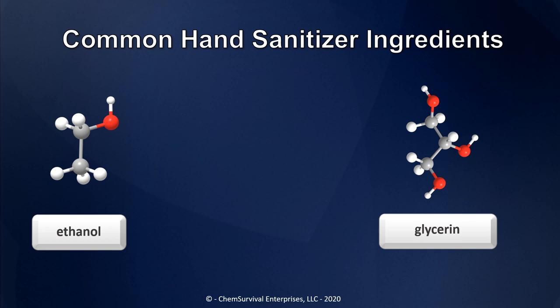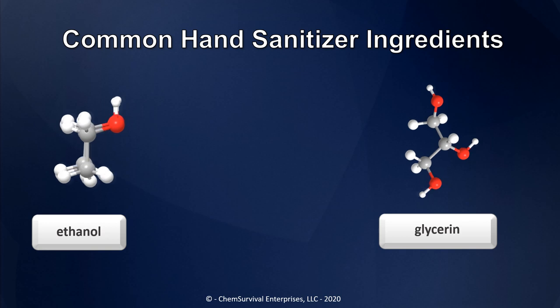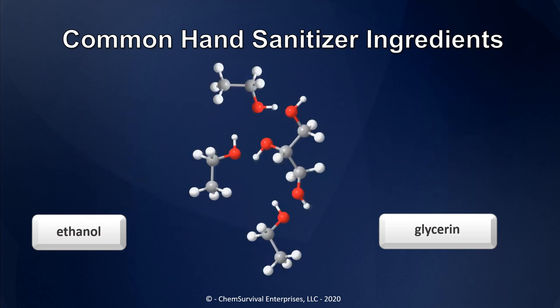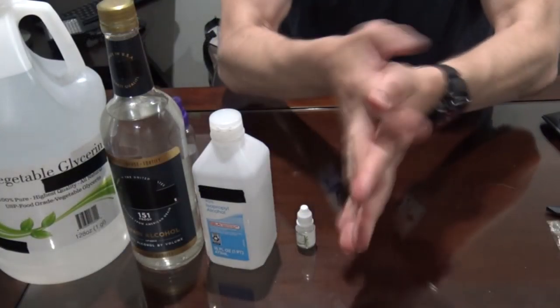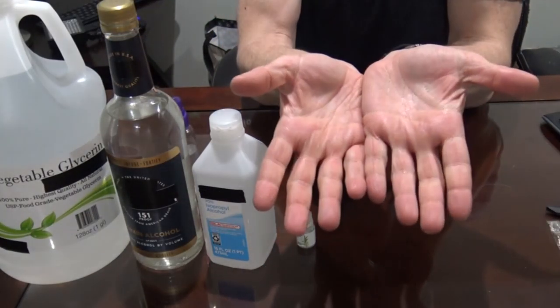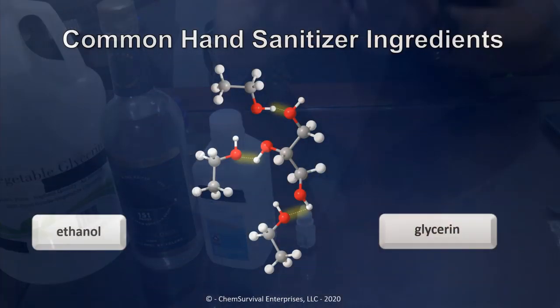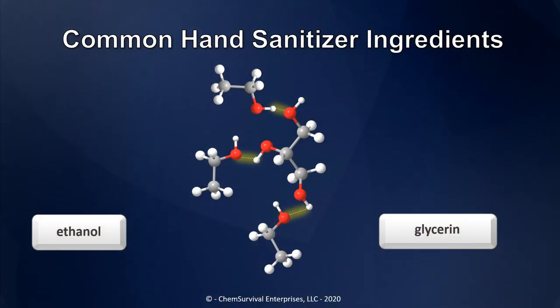When glycerin and ethanol are combined, the same type of hydrogen bonding interactions happen between the glycerin and ethanol, slowing the evaporation of the mixture so it stays on your hands longer. Its ability to slow the evaporation of the ethanol is the real reason why most, if not all, hand sanitizer products will use glycerin.